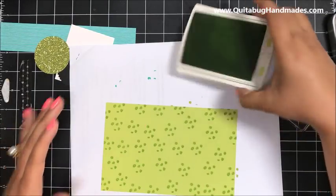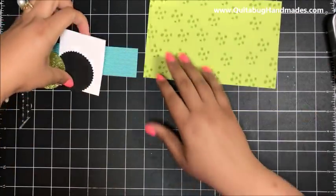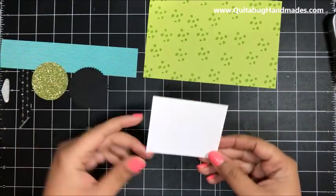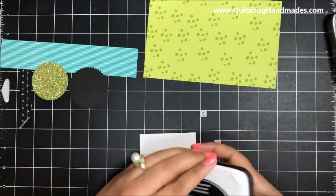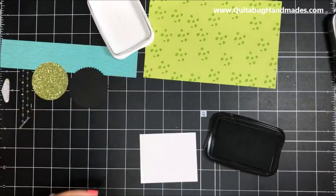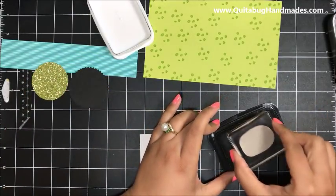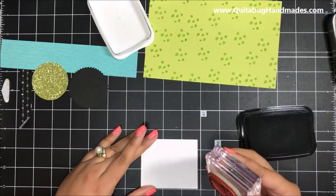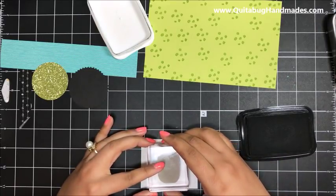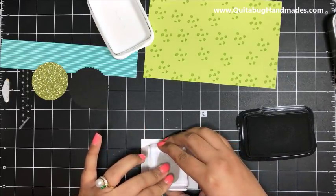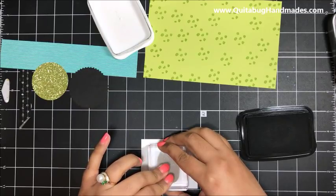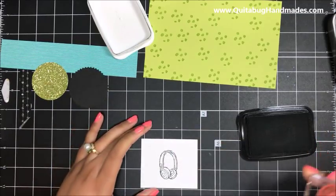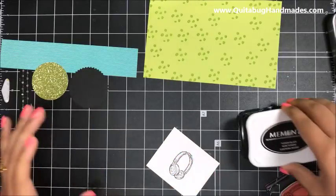I think that looks pretty good. Now I'm going to take this little piece of Whisper White cardstock, bring in my Memento Tuxedo Black ink and my little pair of headphones. I'll just stamp these in the center. I want these to start drying while we do the scoring for the gift card holder.